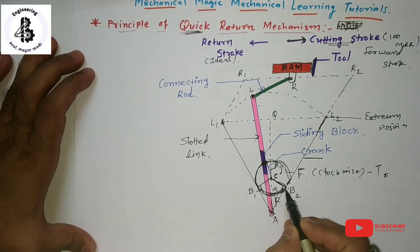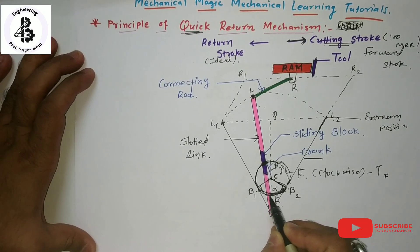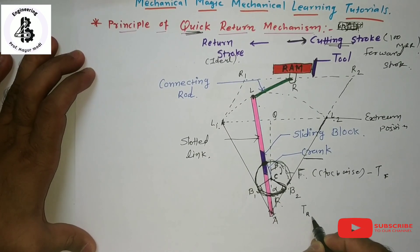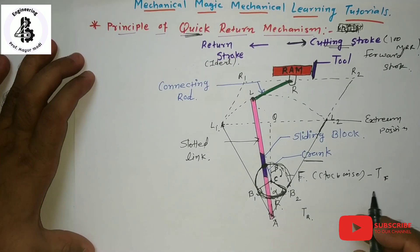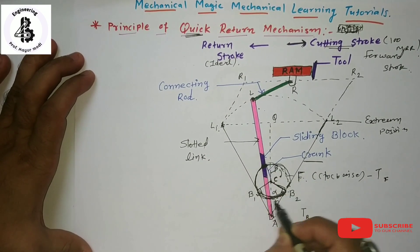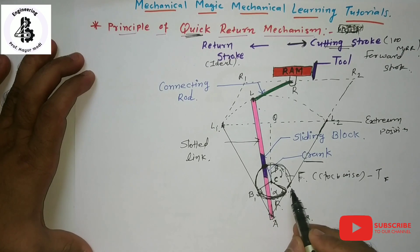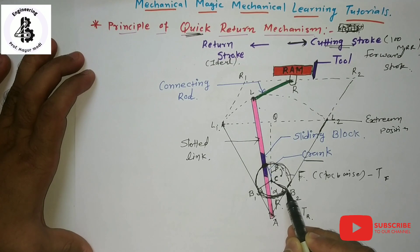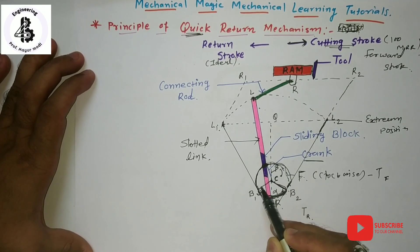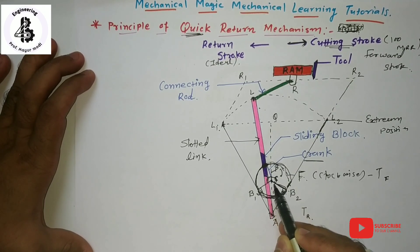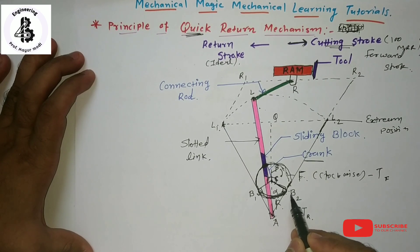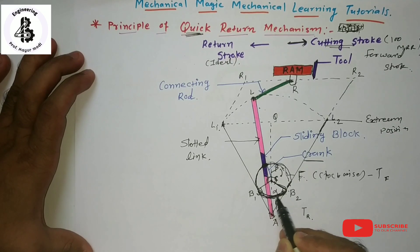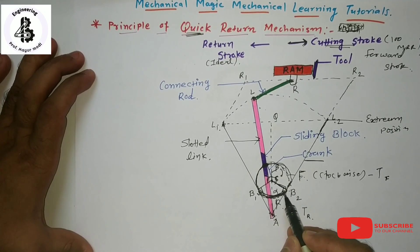The time taken from B2 to B1 is the return time. Considering clockwise movement, the time taken for the forward stroke is larger because it subtends a greater angle, while the time taken for the return stroke is less because it covers only a smaller angular region.